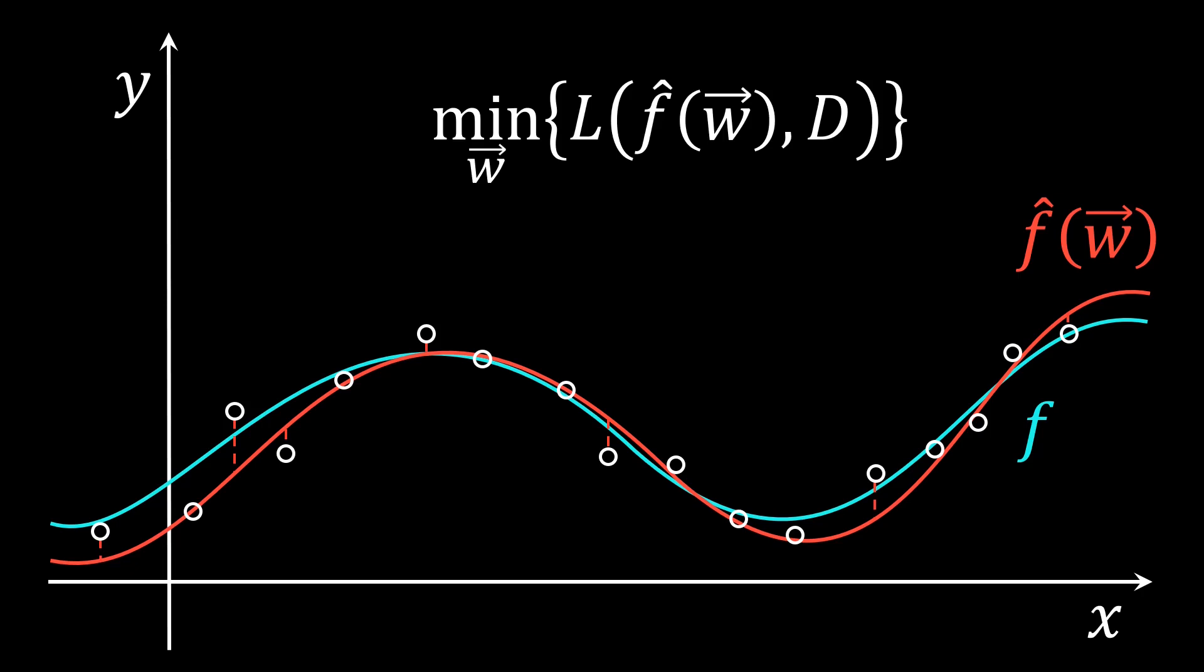For some choices of loss and f hat, there actually exists a closed form solution. This means that there is a formula where we can just plug in the values from our dataset to get the answer. However, this is not always possible. In this video, we will introduce you to a simple algorithm that can find a good set of weights, even if there is no closed form solution.